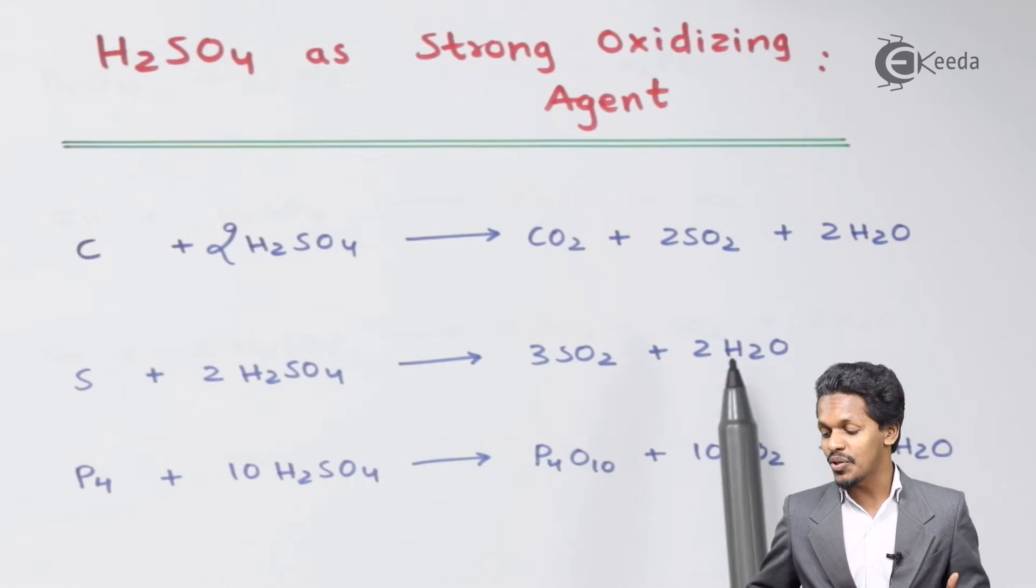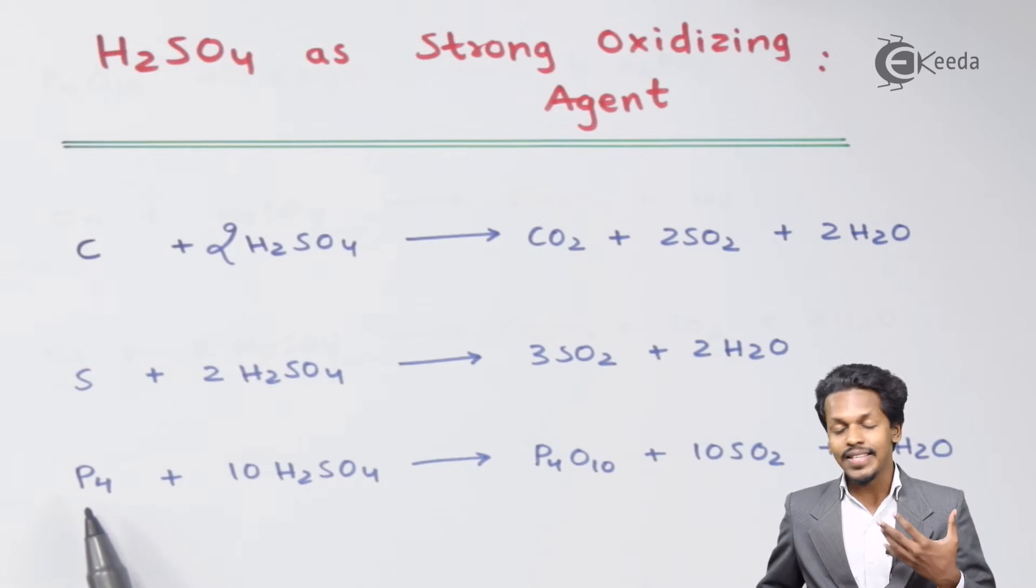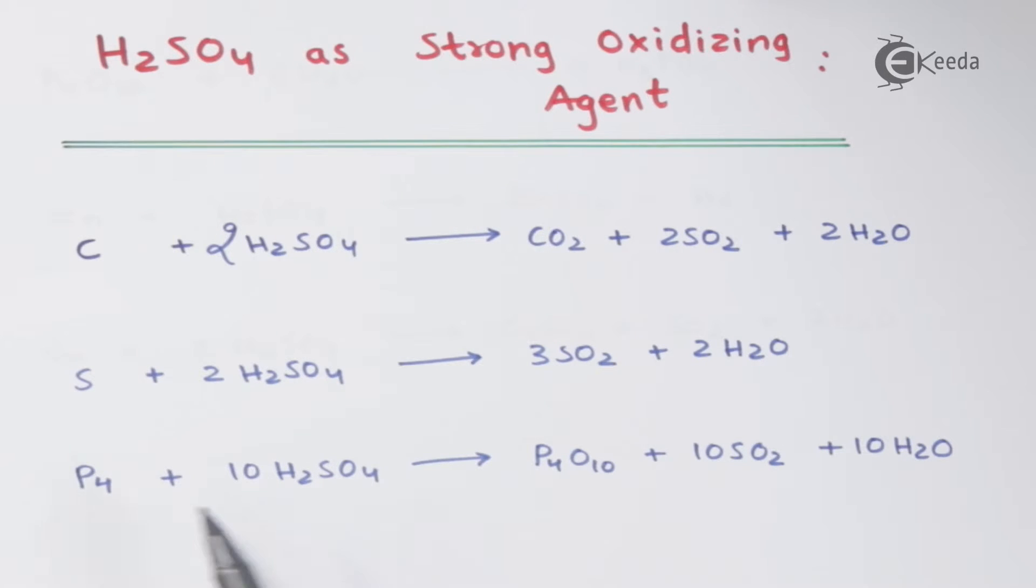We understand H2SO4 is also a good dehydrating agent. Here is another example: when white phosphorus is treated with 10 moles of H2SO4, it will produce P4O10 along with 10 moles of SO2 and 10 moles of H2O. Here the phosphorus is also oxidized, and that's the reason H2SO4 is acting like an oxidizing agent.